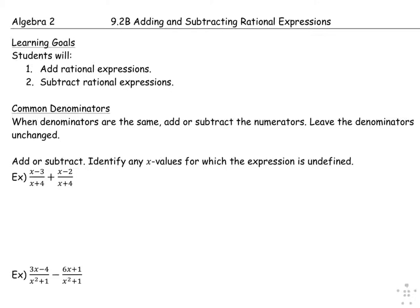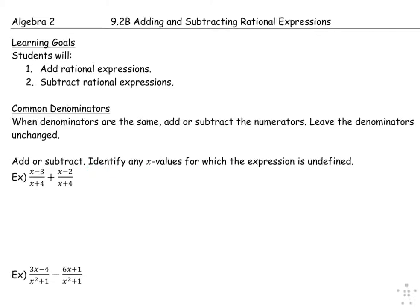For the first example, the direction is to add or subtract, and we have to identify any x values for which the expression is undefined. I'll start off with the exclusions, realizing they are values that make division by zero. So I took x plus 4, I didn't want it to be zero, and I use algebra to find out whatever x values that would be.